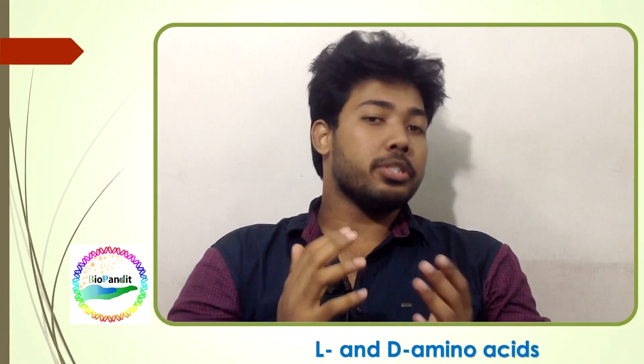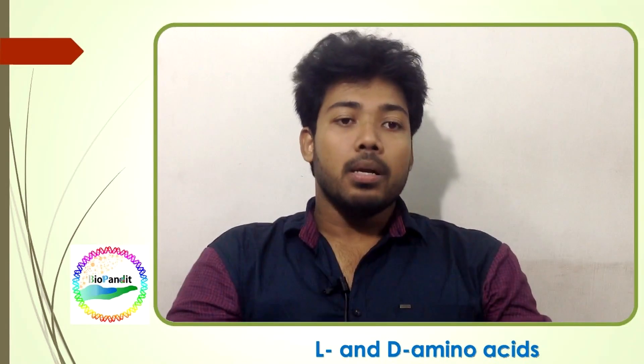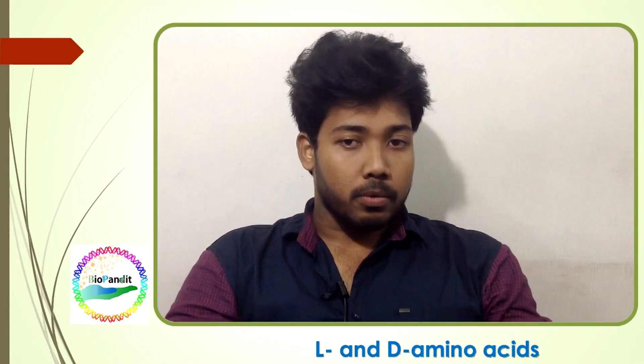Those of you familiar with stereochemistry know that chemical compounds can be classified into two steric forms — levorotatory and dextrorotatory — based on their ability to change the polarization plane of plane-polarized light. So how do we know which chemical compound is levorotatory and which one is dextrorotatory?